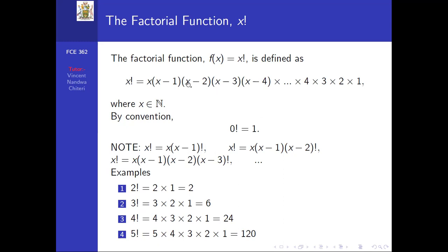Once x! is defined in that form, note that the product starting from (x minus 1) times (x minus 2) down to 1 defines (x-1)!. Therefore x! can also be written as x times (x-1)!. Similarly, the product from (x minus 2) down to 1 defines (x-2)!, so x! can also be written as x times (x-1) times (x-2)!.